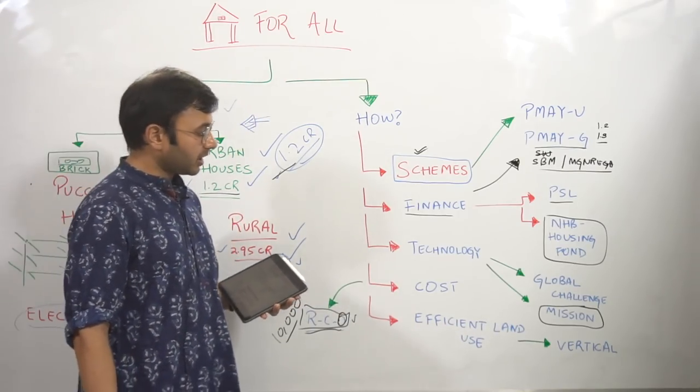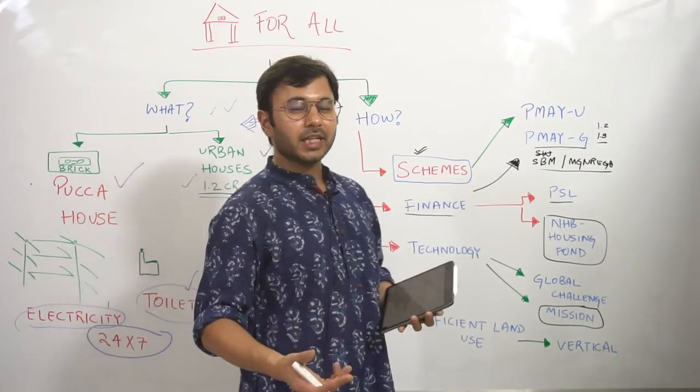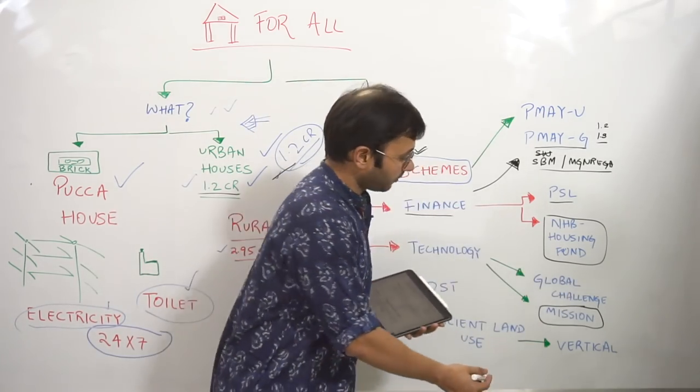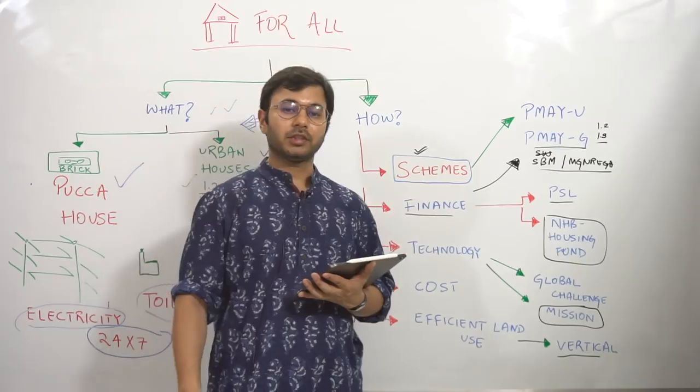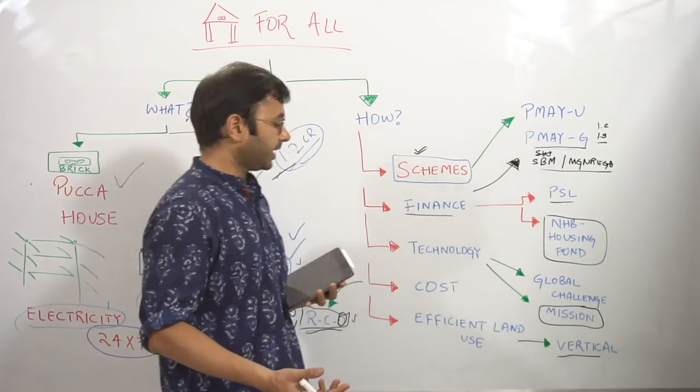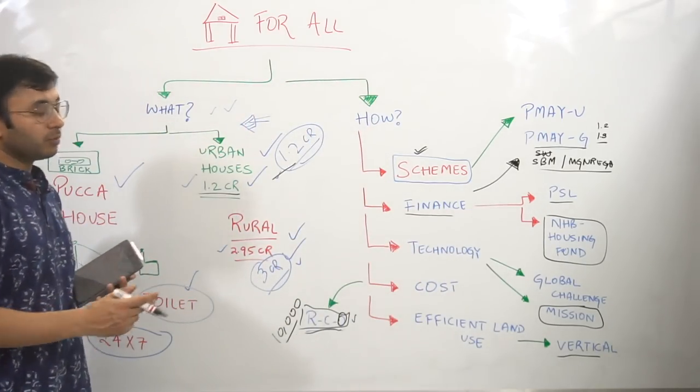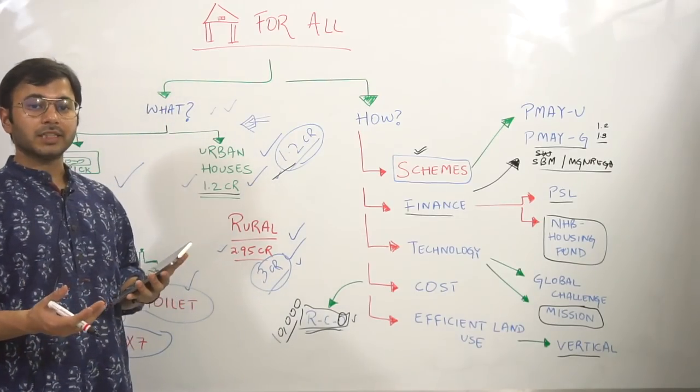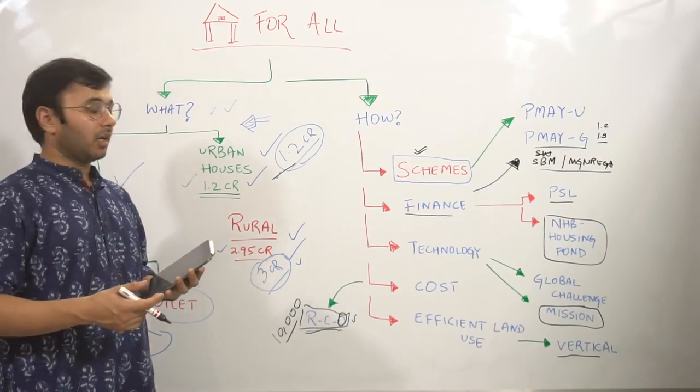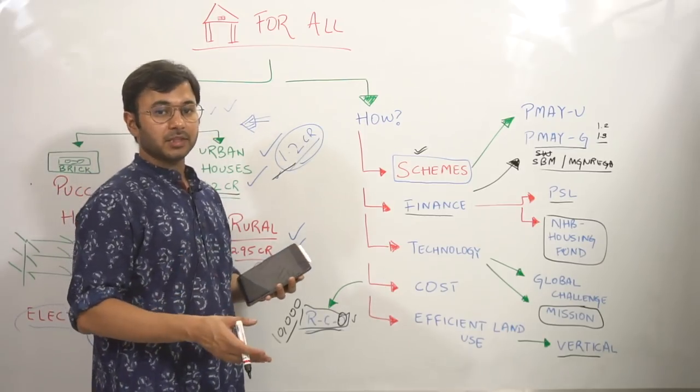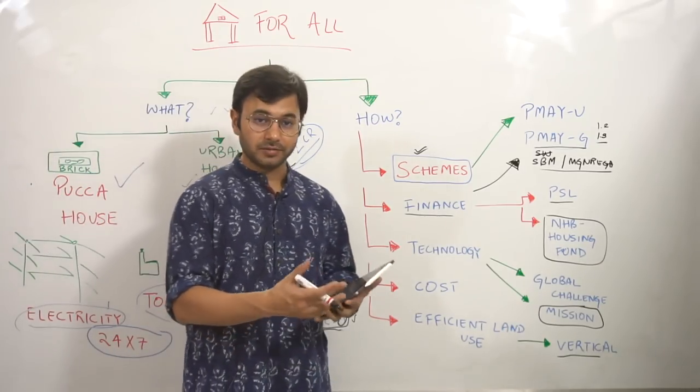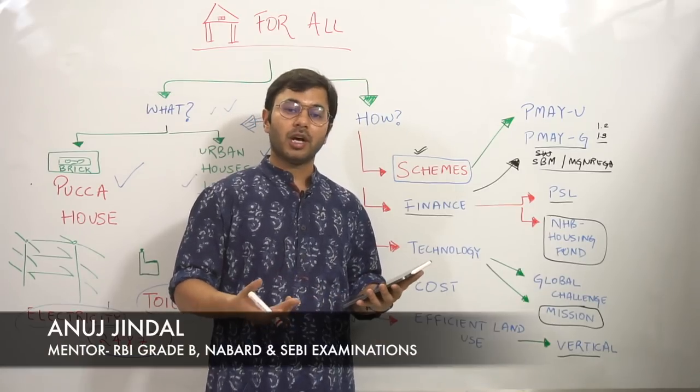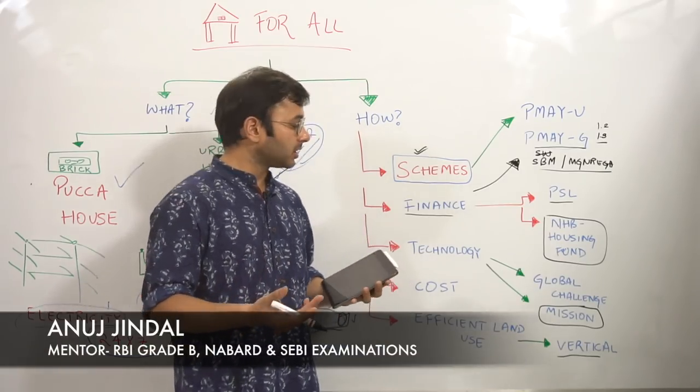And last we have efficient land use. It says, the Niti Aayog says that we need to move towards vertical housing. From horizontal housing, this is the main recommendation or the way forward that we need to move towards vertical housing in order to ensure that we are utilizing the land more efficiently. At the same time, we have less pressure on land because we have a huge population.